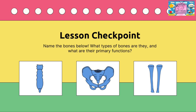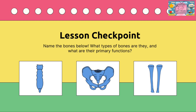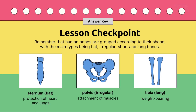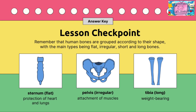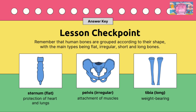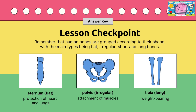Listen, then name the bones, identify what types of bones they are, and state their primary functions. Remember that human bones are grouped according to their shape, with the main types being flat, irregular, short, and long. For example, the sternum is a flat bone whose primary function is the protection of the heart and lungs.